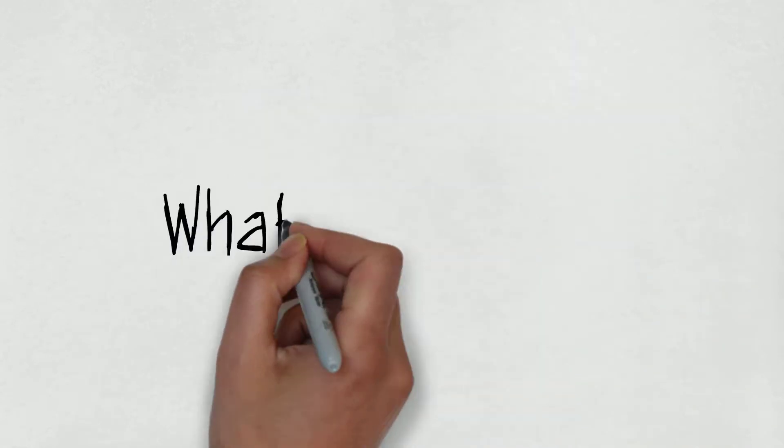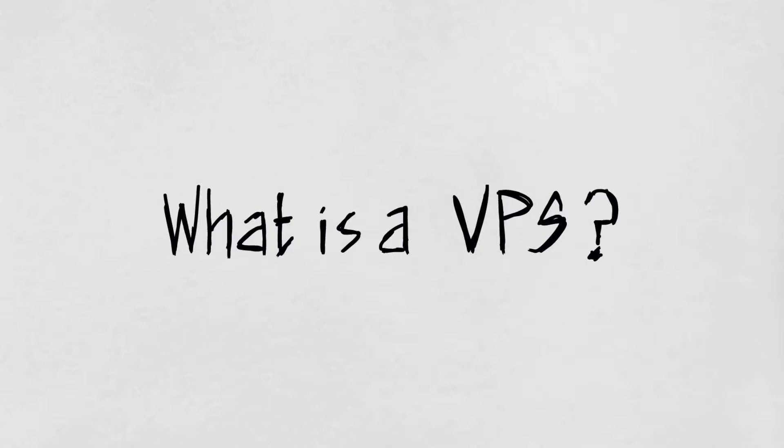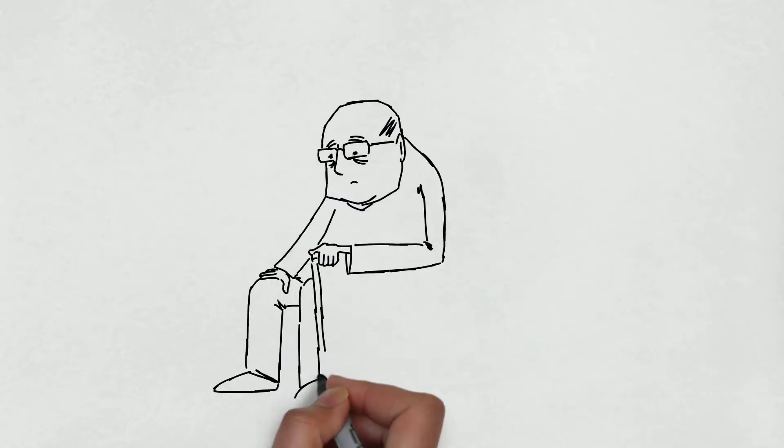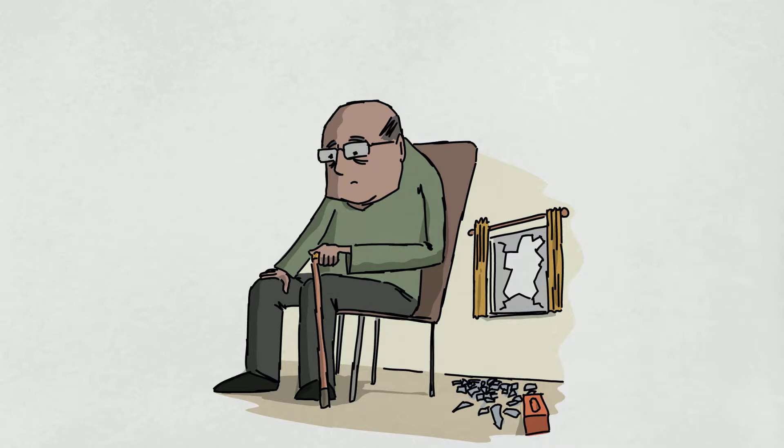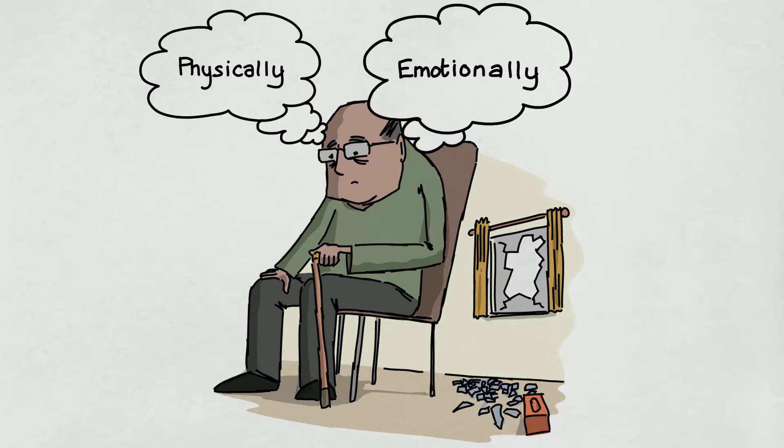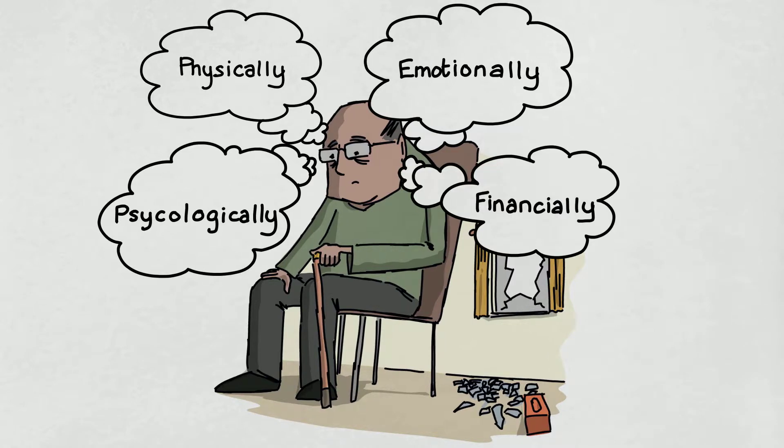What is a VPS? A VPS allows a victim of crime to explain, in their own words, the impact the crime has had on them. Physically, emotionally, psychologically, financially, or in any other way.